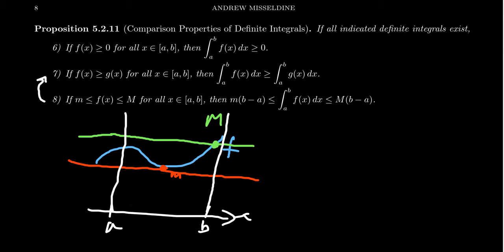Well, if you treat y equals m as a constant function, that constant function sits below the function f of x. So by property 7, the area under the constant function will be less than the area under f. And that area just so happens to be a rectangle.